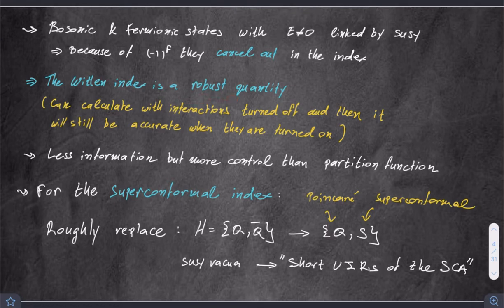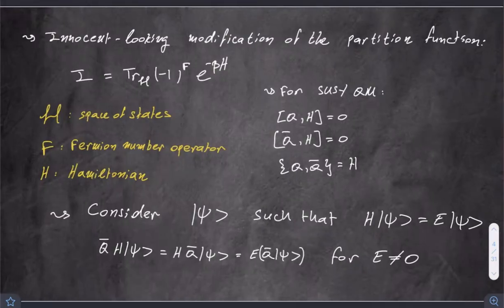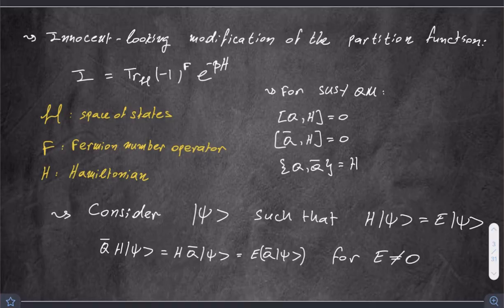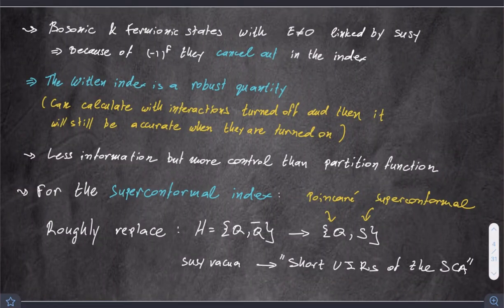The Witten index is a robust quantity — it does not change under continuous deformations. Just from this expression, you see that the index does not depend on beta, because all the states where beta would come in pairwise cancel. It is independent of any other continuous parameter which preserves supersymmetry. The index is just a bunch of numbers and does not change continuously. You can have potentially some discrete jumps, but let's not investigate that subtlety right now.